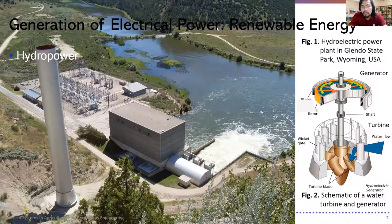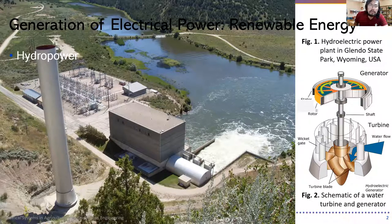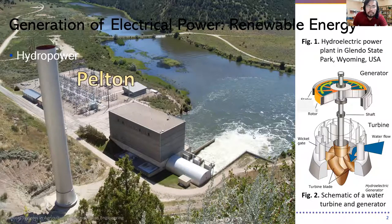A hydropower plant, as shown in figure one, operates by virtue of one of the kinds of turbines available commercially, or probably a combination thereof. The three most common are the Francis, the Pelton, and the Kaplan turbines.